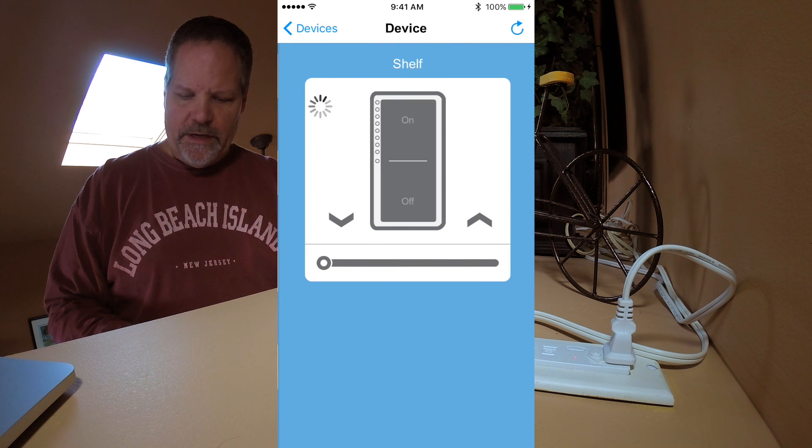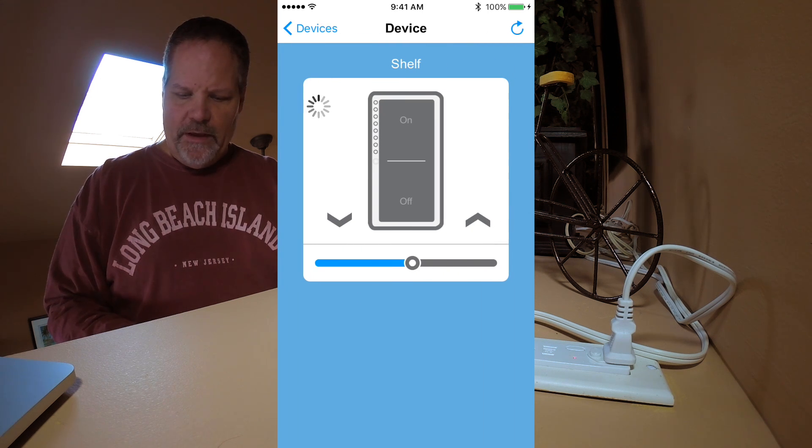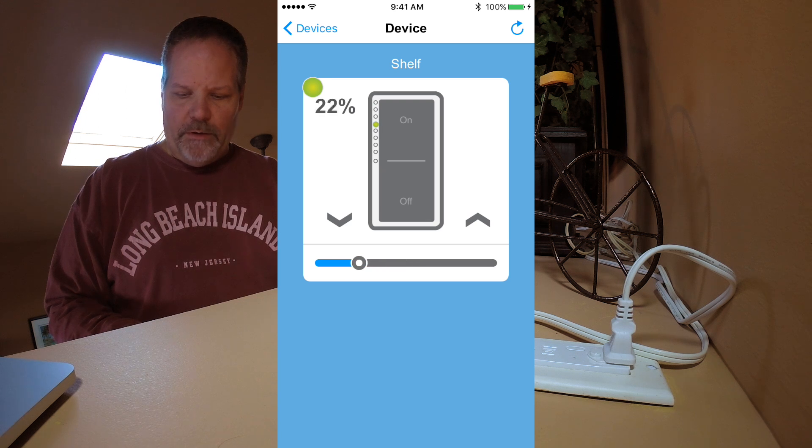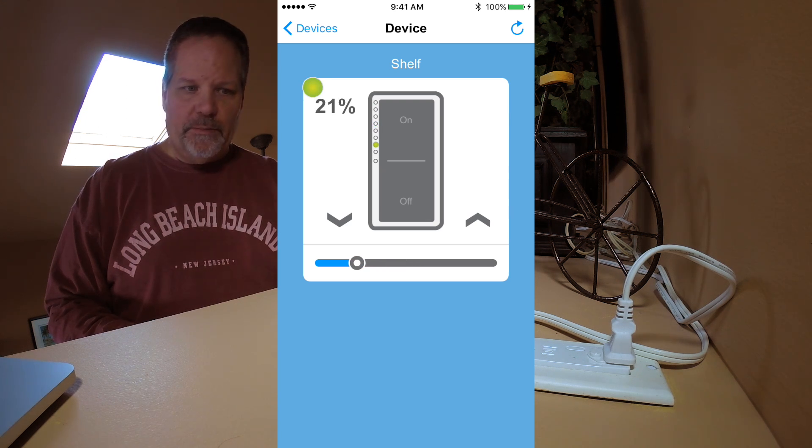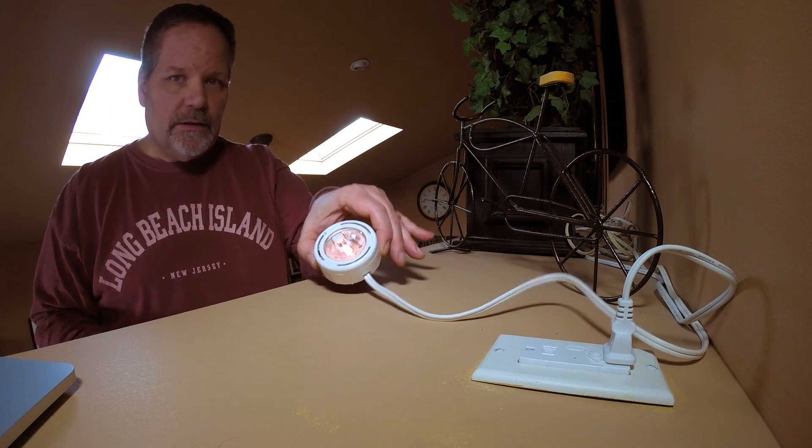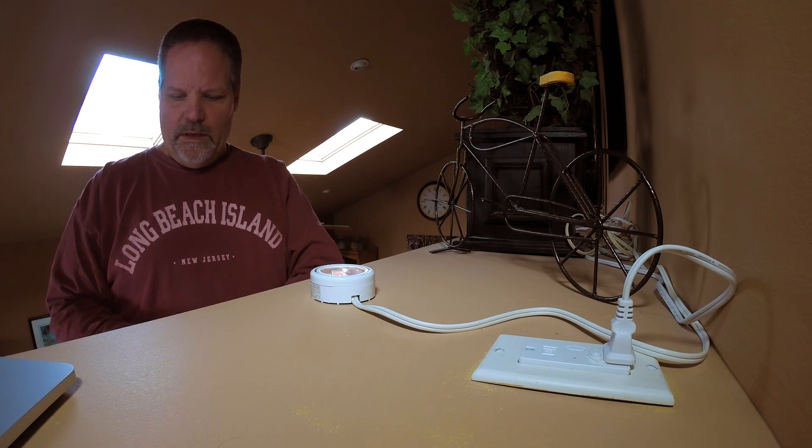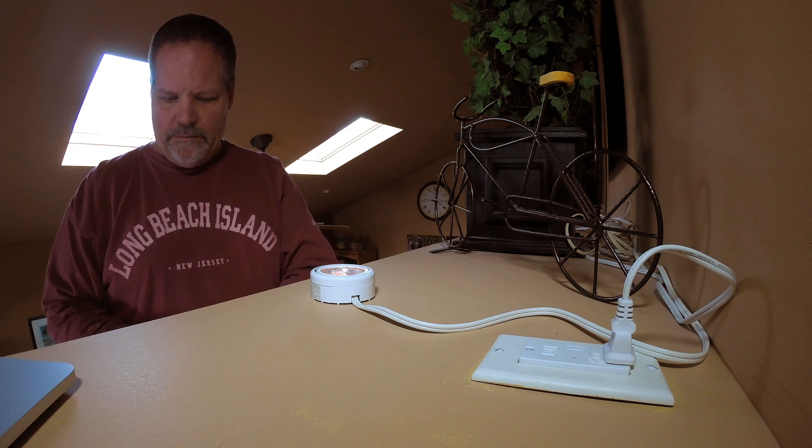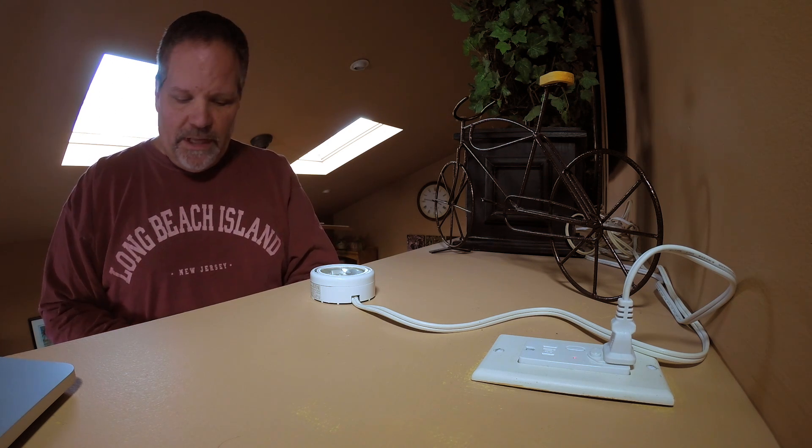And this is also a dimmer, so I can go into the dimmer settings and say bring it up halfway, bring it down to 25%. Really make it mood lighting, if we really want to. You can see there that it's on. All right, that works great. Now I can get off the ladder.